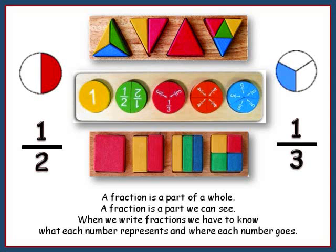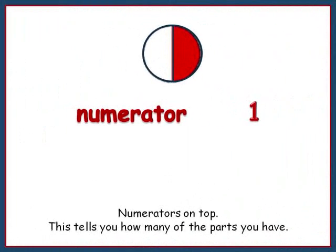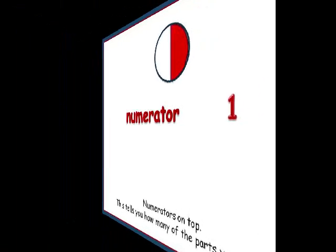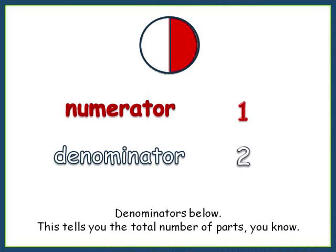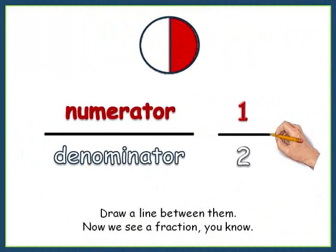A fraction is a part of a whole. A fraction is a part we can see. When we write fractions, we have to know what each number represents and where each number goes. Numerators on top — this tells you how many of the parts you have. Denominators below — this tells you the total number of parts you know. Draw a line between them, now we see a fraction you know.